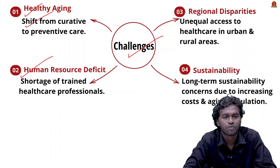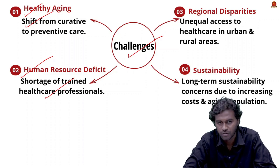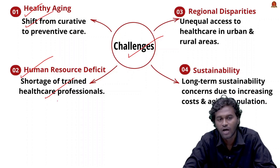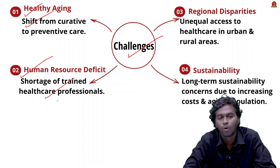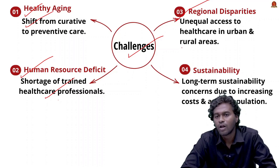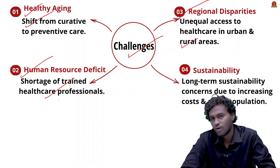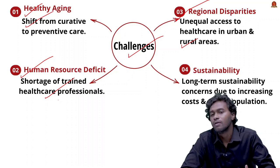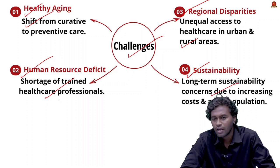The second major challenge is human resource deficit — the nation faces a shortage of trained healthcare professionals, particularly geriatricians who are experts in treating the elderly, as well as nurses. A major reason is the increasing migration of healthcare graduates to other countries for better opportunities. The third challenge is regional disparity — due to the rural-urban divide, elderly populations in remote and backward areas face unequal access to healthcare.